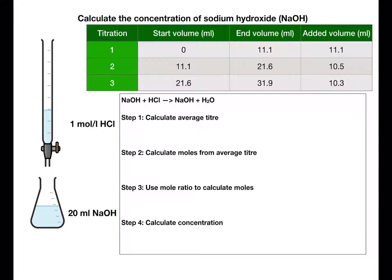I'll quickly run through the method I'm going to use in this video — the moles method. I've chosen this method because once you've learned how to do this for titrations, it can also be transferred to mass-to-mass calculations, calculations involving both mass and concentration, and later in Higher for things like percentage yield. So this is a method which can apply to multiple different calculations.